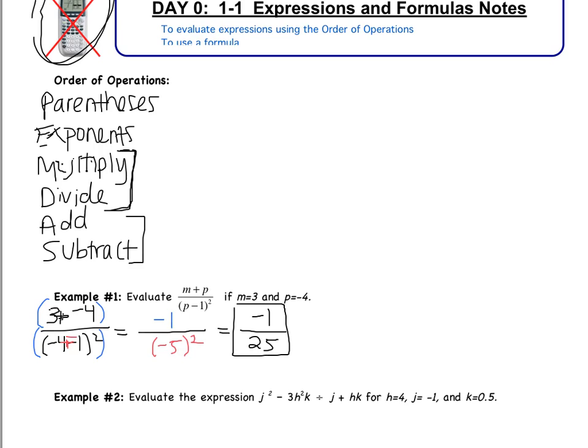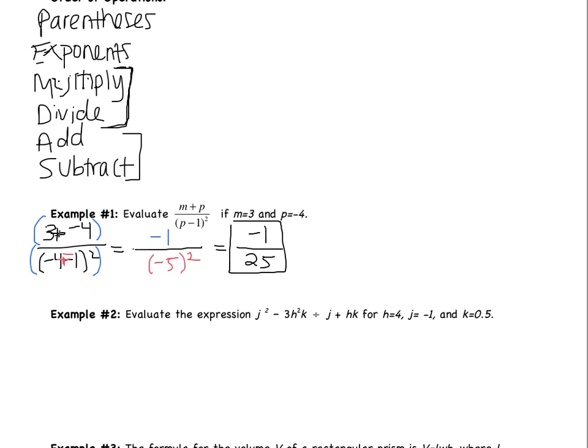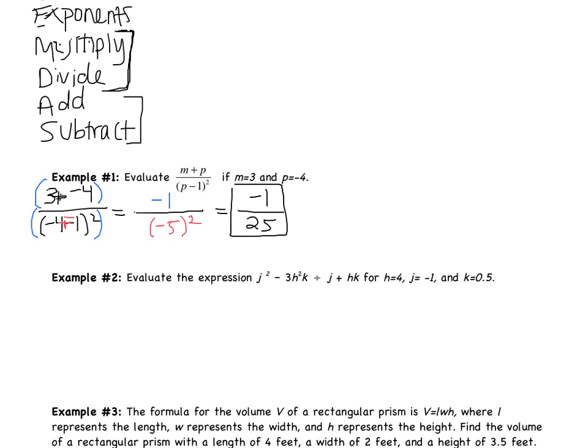Leave your answer as a fraction when possible. Now let's move to Example 2. Evaluate the expression for h equals 4, j equals negative 1, and k equals 0.5. Start by substituting all of those numbers in — don't skip that step.